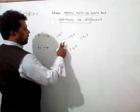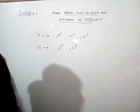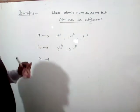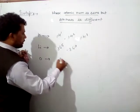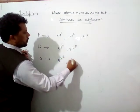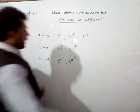Atomic number same hai, mass number different hai. Similarly for oxygen you can write: 8O16, 8O17, and 8O18.